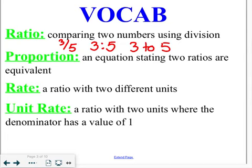A proportion is an equation that says two ratios are equal to each other, so two equivalent fractions. For example, 3 fifths is equal to 6 tenths. That's setting up a proportion. There are two equal ratios.